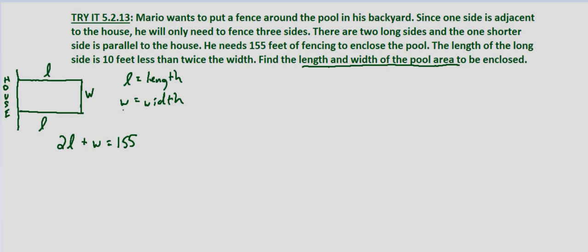Now we're also told that the length of the long side is 10 feet less than twice the width. So L equals 10 feet less than twice the width, so 2W minus 10. So here's our system of equations.